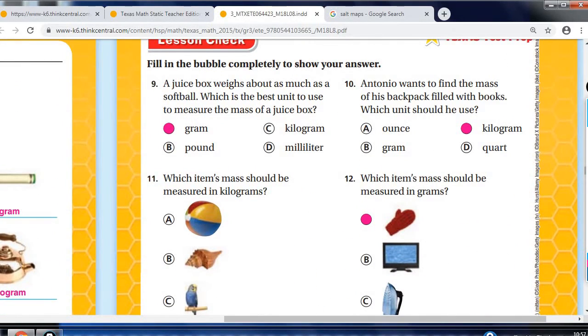Again, we're looking at what type of unit would you use to measure the mass. A juice box weighs about as much as a softball. Which is the best unit to use to measure the mass of a juice box? We know it's not going to be pounds because that's not metric. We know it's not going to be milliliter because that does not measure mass. So again, it's either gram or kilogram, and it will be gram. Sometimes we get mixed up with a milliliter. We get mixed up, but that measures your volume of liquid.